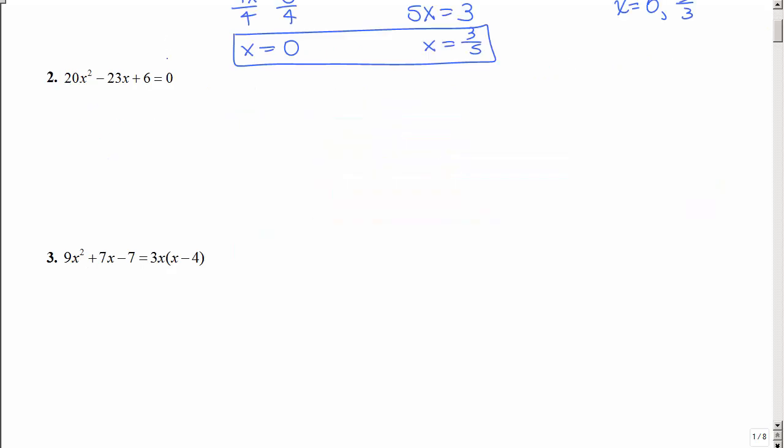On the next problem, we still have equal to zero, but this time we have a trinomial. We don't have a greatest common factor. There are several methods to factor a trinomial. And everybody kind of does it a little bit differently. But no matter how you do it.